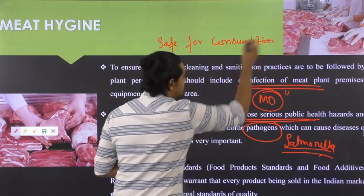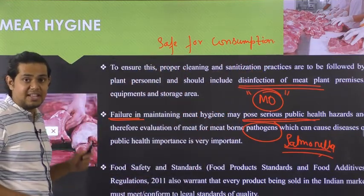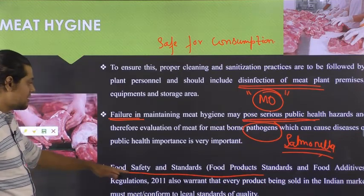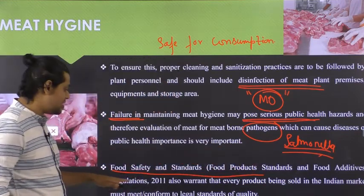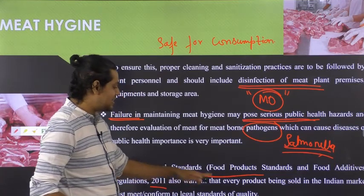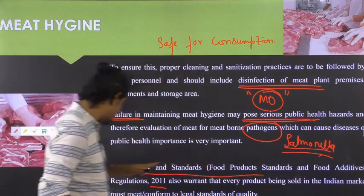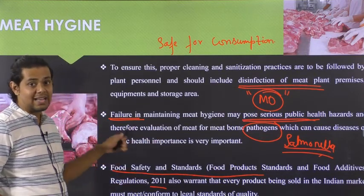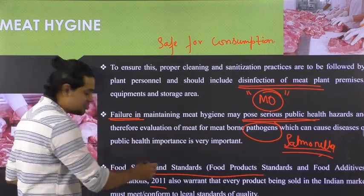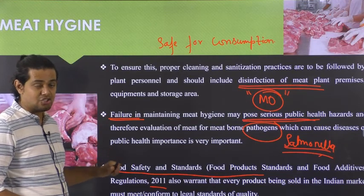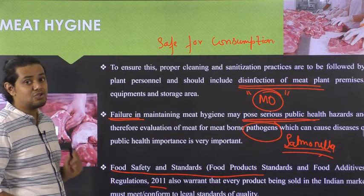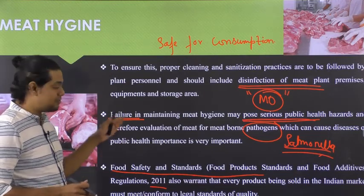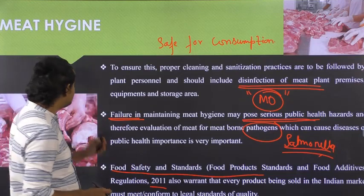In India, the regulatory authority FSSAI, through the Food Safety and Standards (Food Products Standards and Food Additives) Regulations 2011, warrants that every product sold in the Indian market must meet or conform to the legal standard of quality. The meat processing industry must abide by these standards to prevent any public health hazard arising from consumption of their products.